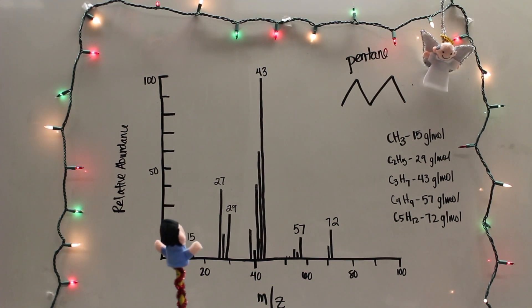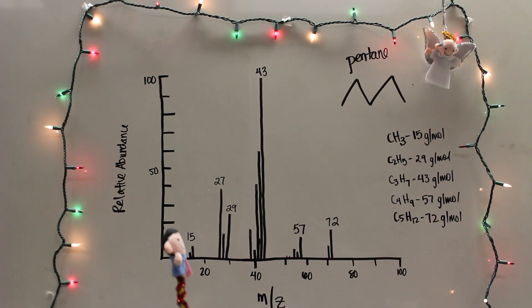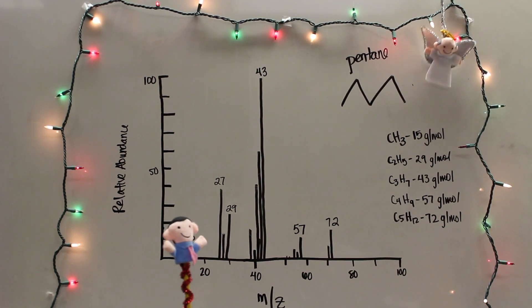That would have to mean the fragmented ion would be a propyl group, right? You're right. It's also important to note that the fragmented ion with the highest mass-to-charge ratio will be the molecular mass of the original compound.